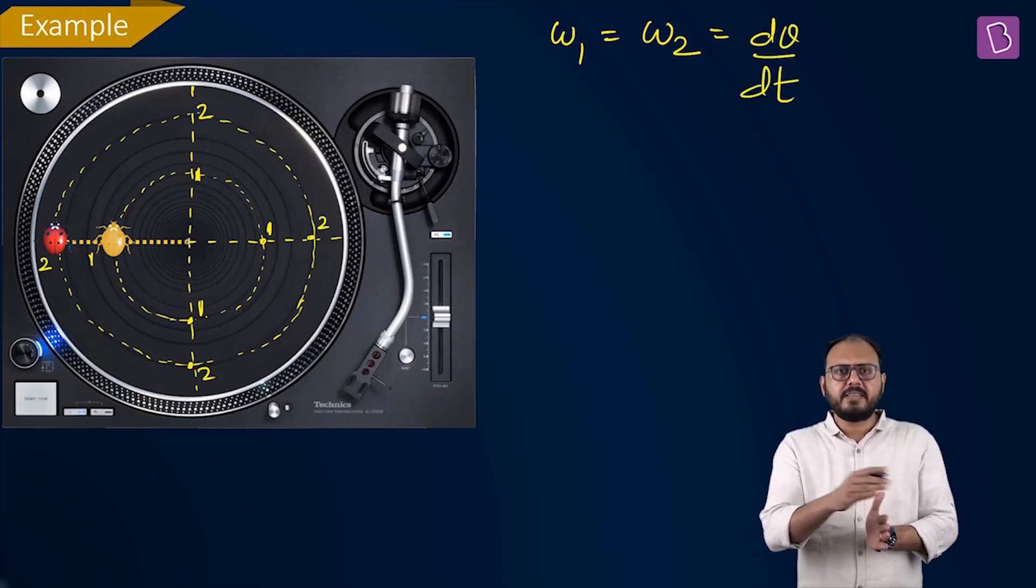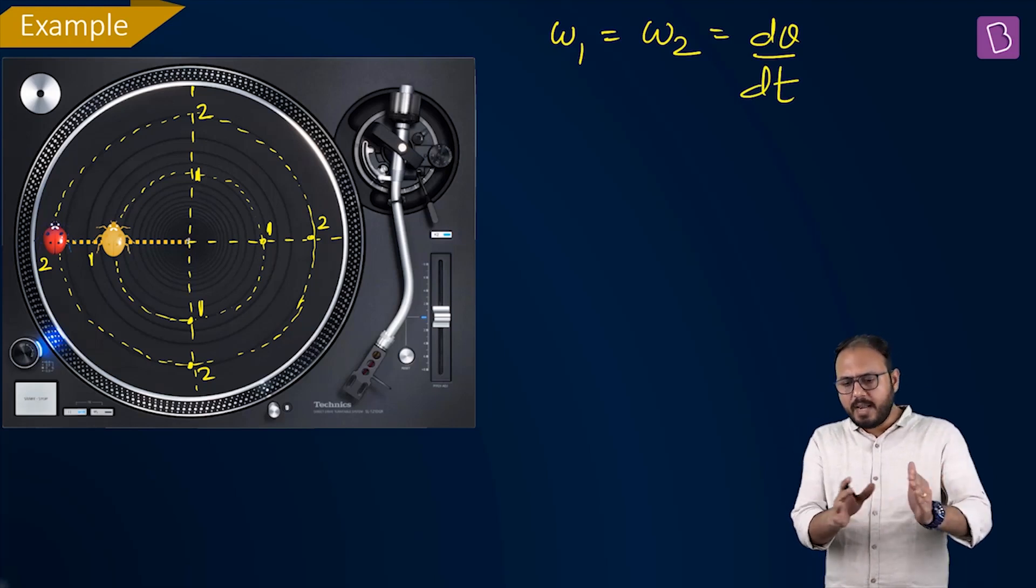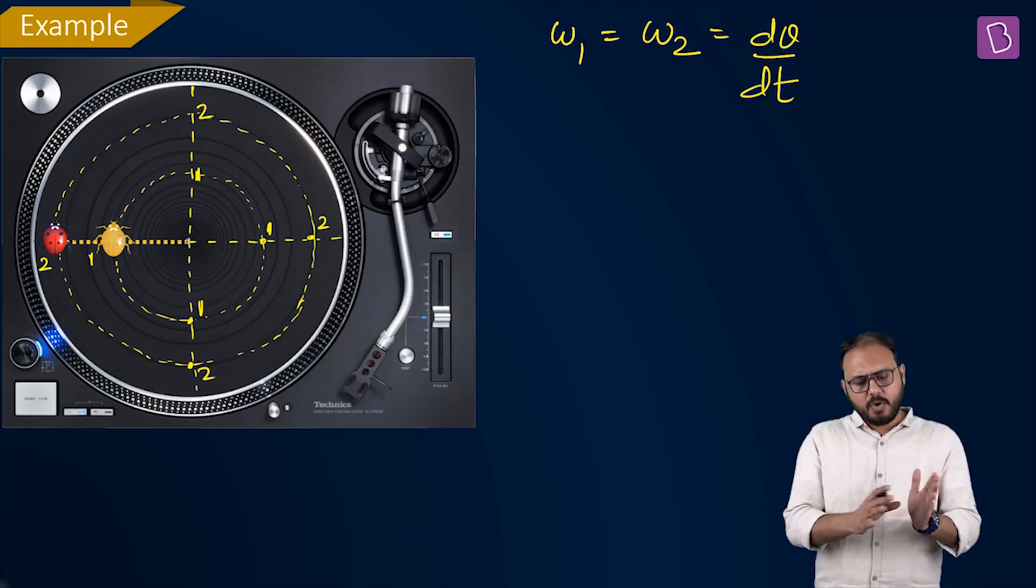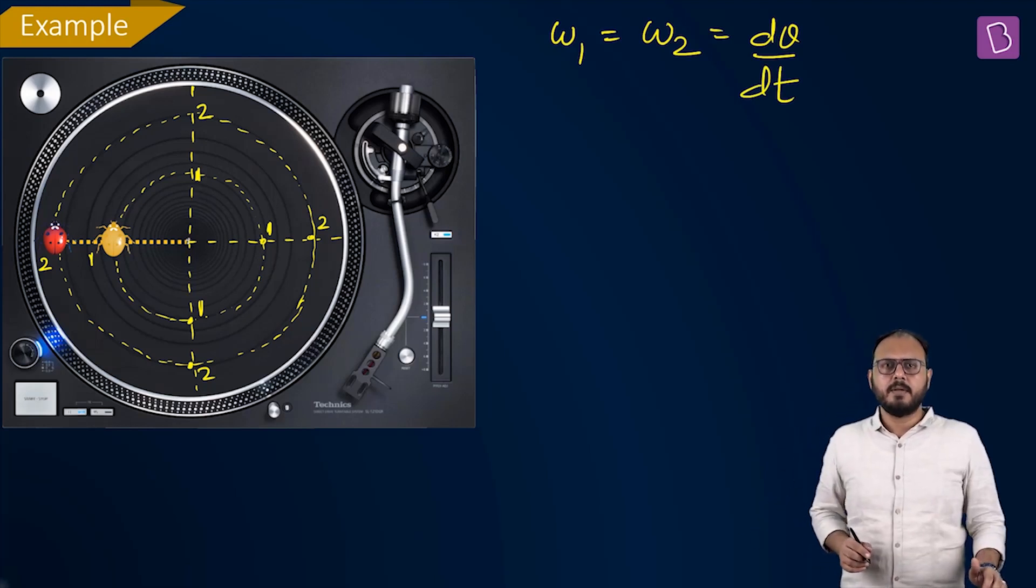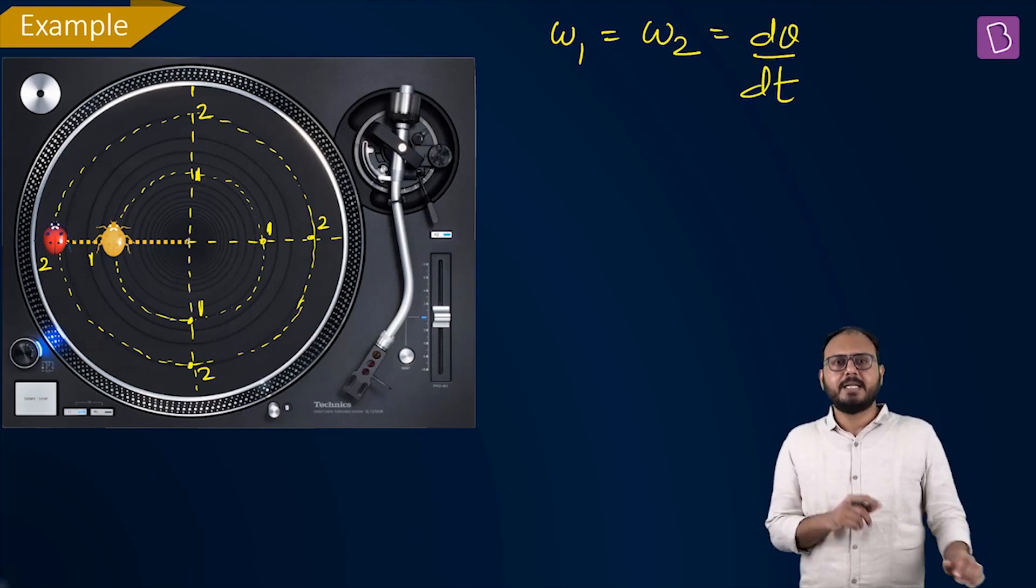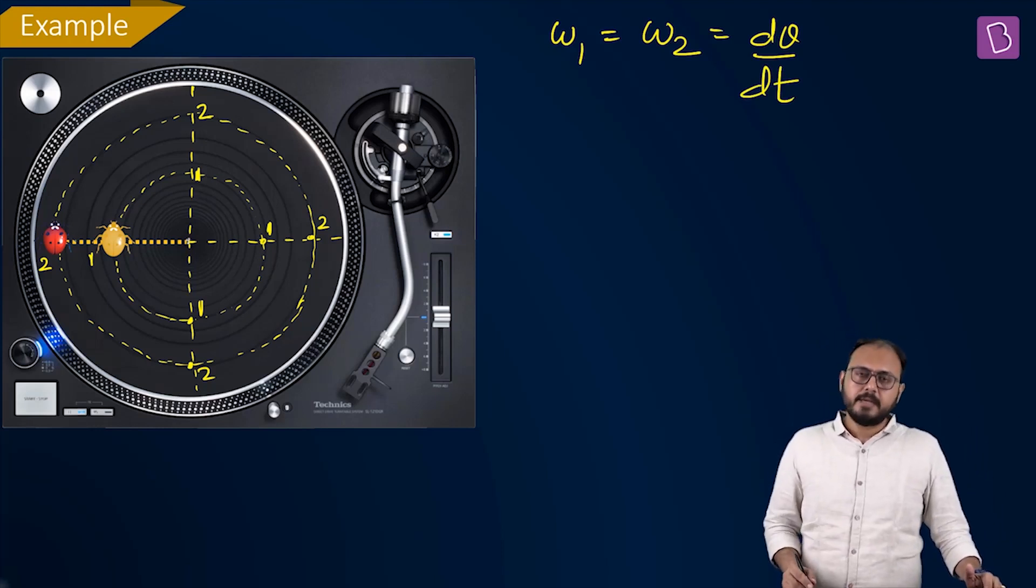ω₁ is equal to ω₂. That means they should sweep equal angles in equal time. Their dθ/dt is same. They are covering equal angles in equal time. But their radius are different. Agreed?